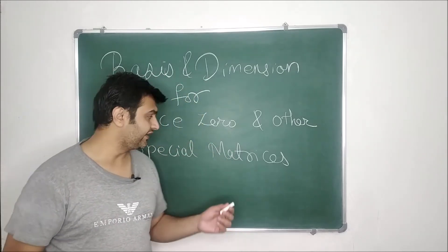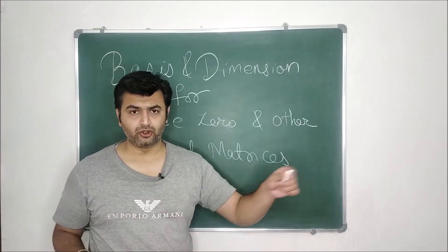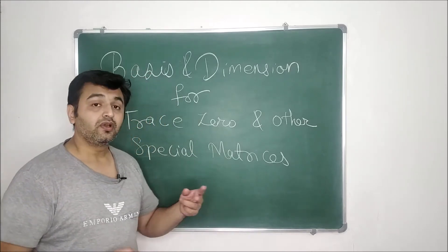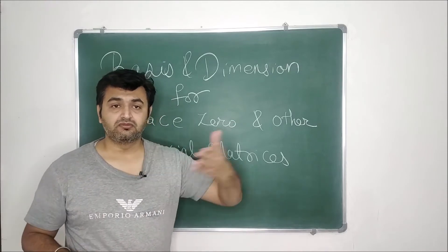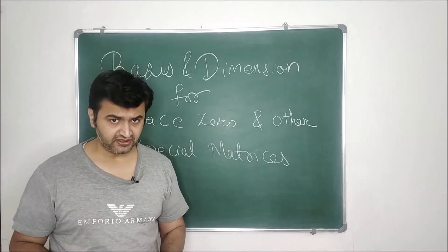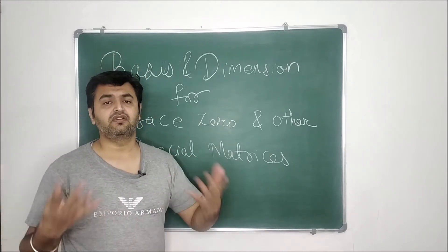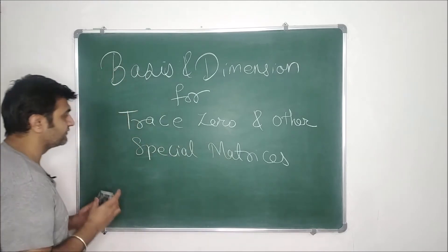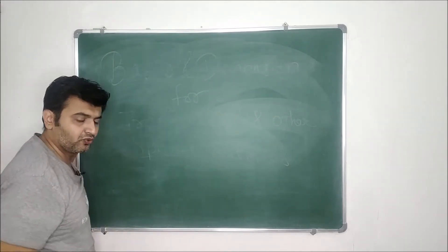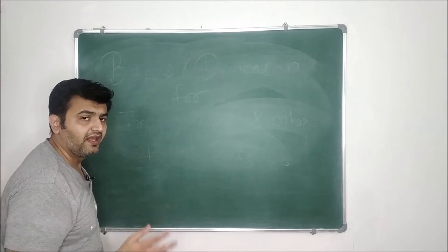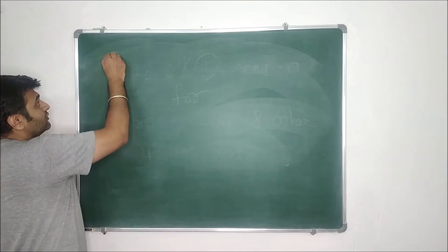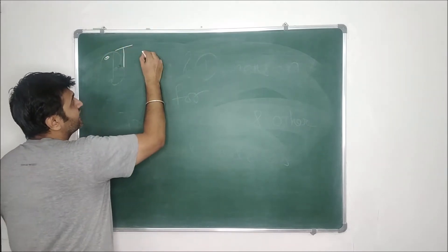I will tell you the trick for trace zero and the hints for other matrices like when the sum of the rows or sum of the column is zero. But if you have a collection of matrices where the sum of the first row is zero AND the sum of the third row is zero — two conditions — then the dimension will change. I am talking about only one condition. Like we did for symmetric and skew symmetric matrices, we will find the basis in two ways: first find the basis then the dimension, and second directly find the dimension.